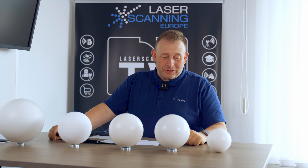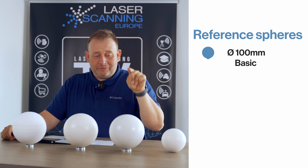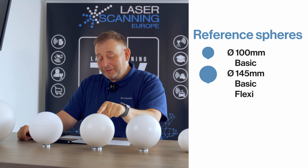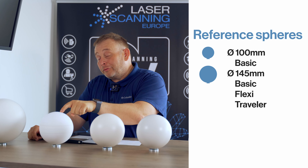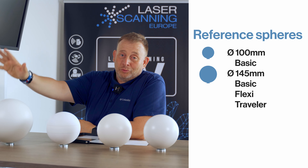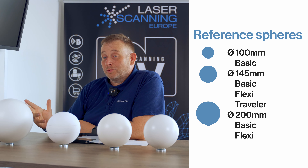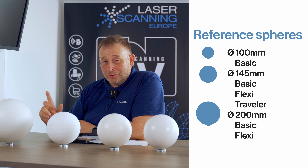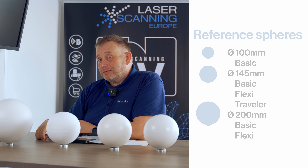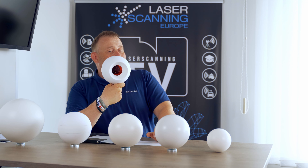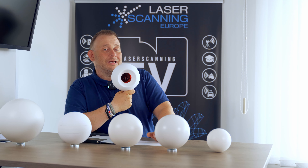Now I'll explain why I have so many spheres here. We start with our smallest one - we used to have 19mm but now I think we have 100 millimeters. Then we have 145mm, and then three models: 145mm basic sphere, 145mm flexi sphere, and 145mm traveler sphere. Then we have 200 millimeters, available in one size and two materials: basic and flexi.